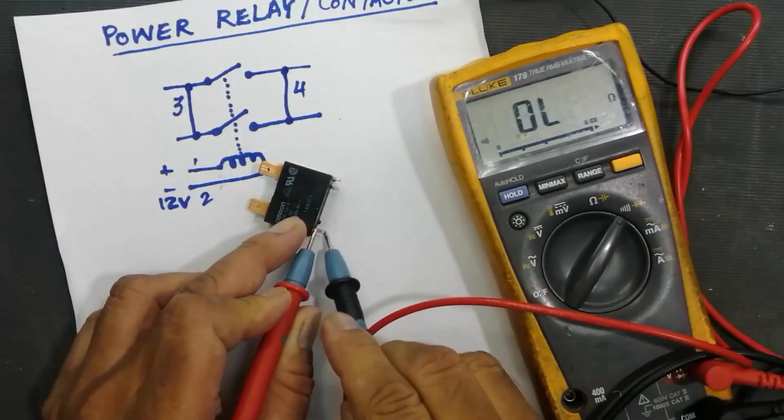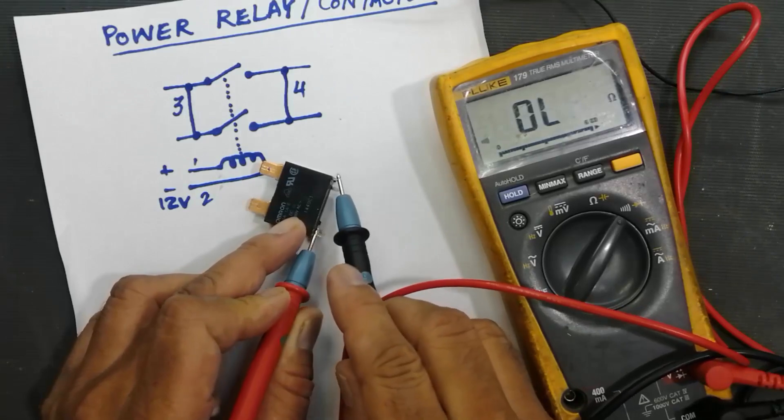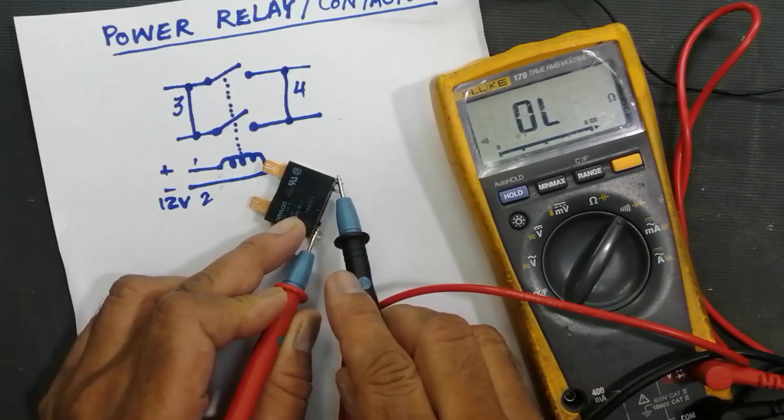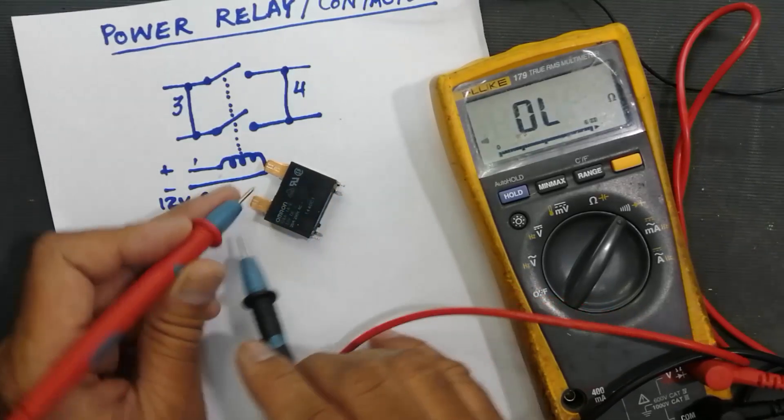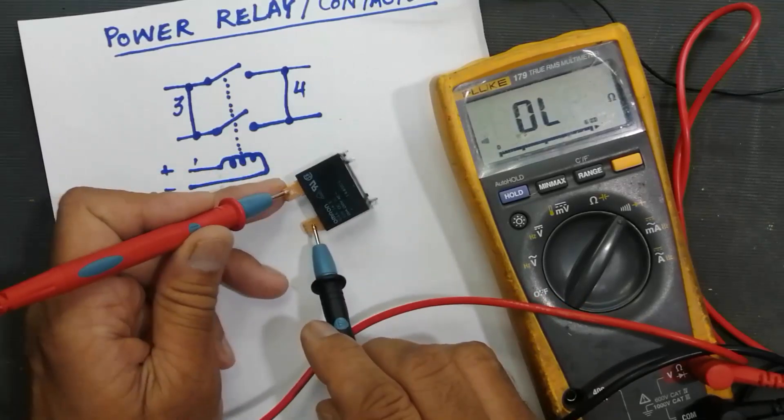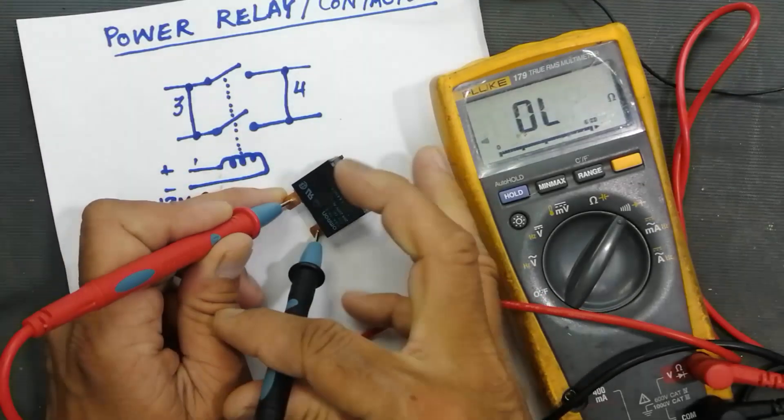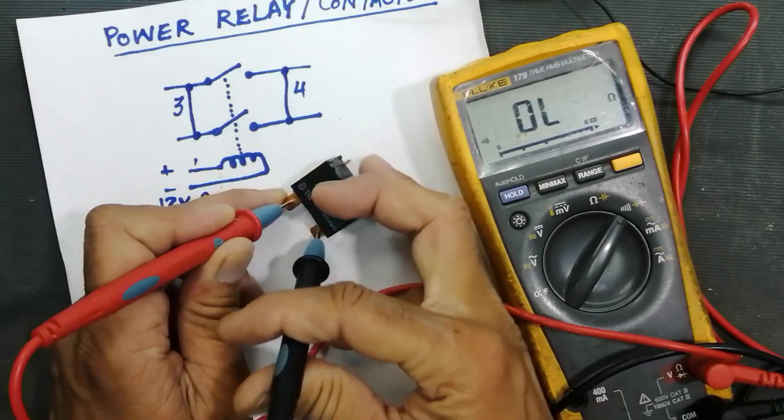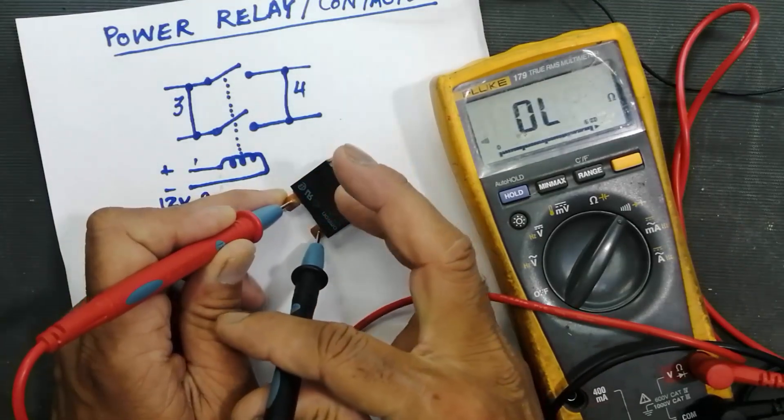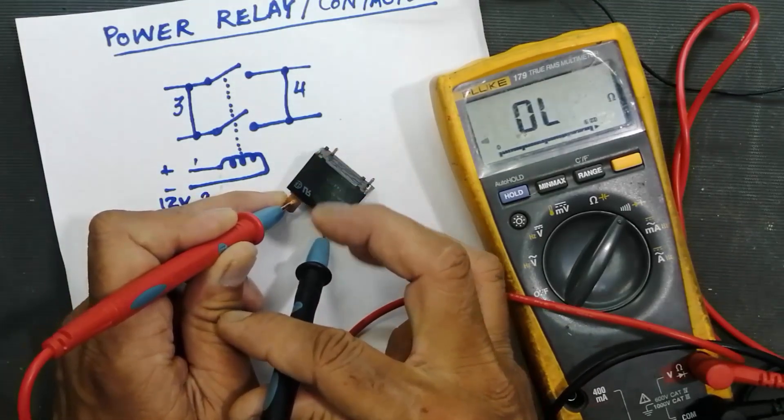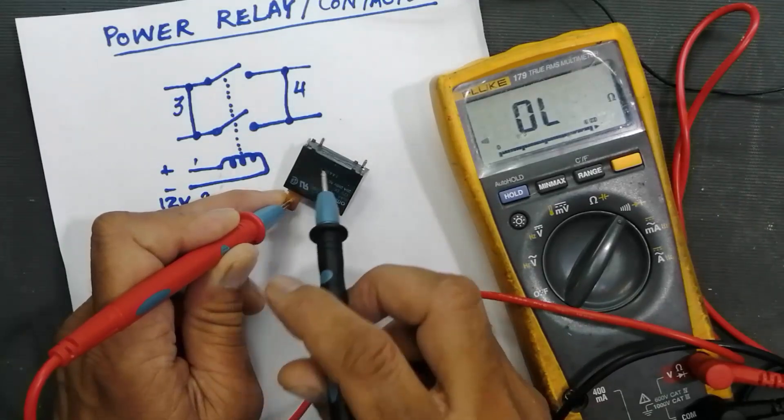And if we apply voltage at the coil point and it does not make the points, that means the relay is bad. And here, when you connected here and we applied coil voltage, control voltage, and the relay does not make connection, the relay is bad.